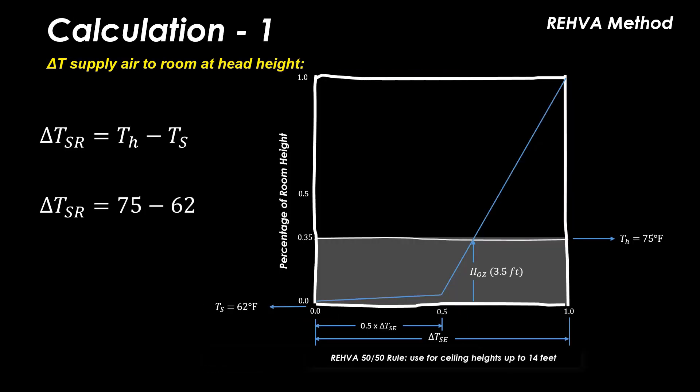So now that we have established some starting parameters, I will go through the calculation process step by step. The first is a calculation to determine the temperature differential between the supply air from the diffuser to the room temperature at head height or space control temperature. Simply subtract 62 from the 75 head height temperature resulting in a delta T of 13°F.